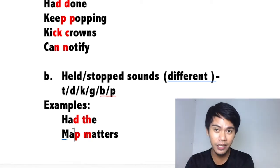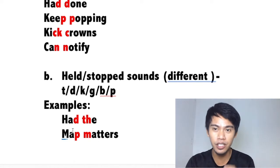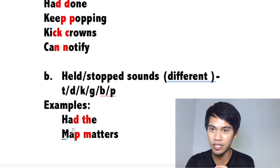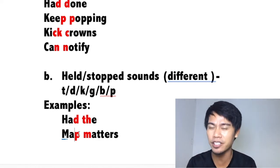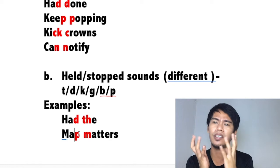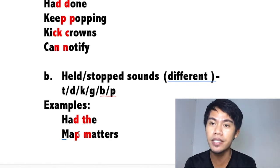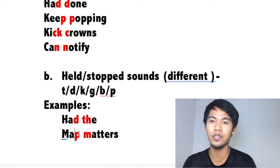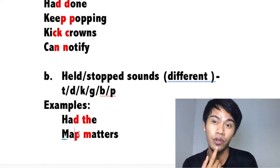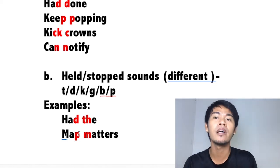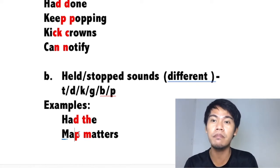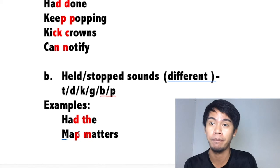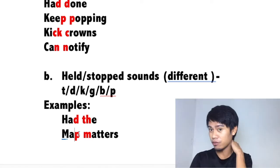How do you do the held sound? You only have to position the initial placement of your articulators — your mouth, tongue, teeth, vocal cords, and so on. The initial position of the P sound is like this: just close your lips, there's no sound released. So for 'map,' you position your lips for the P but don't release it. You're not going to say 'map' with a released P — just do the held position: 'map.'